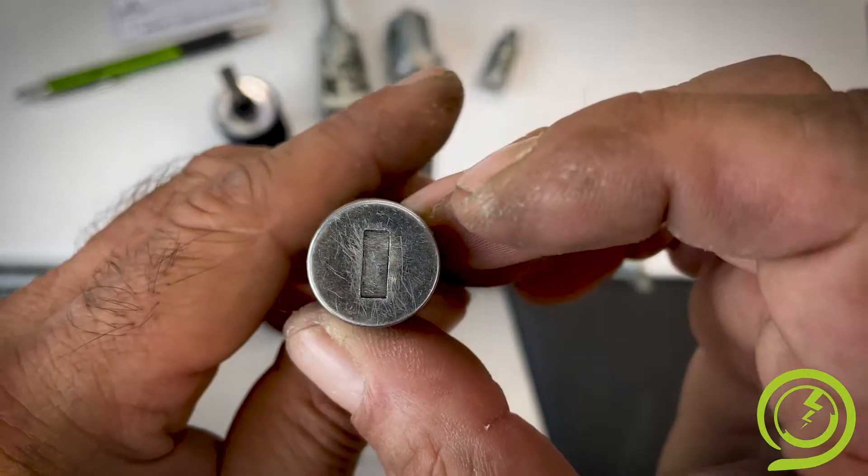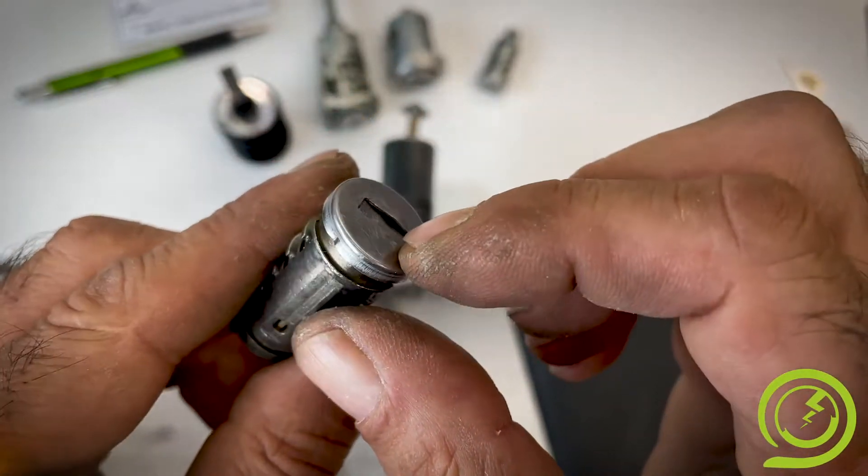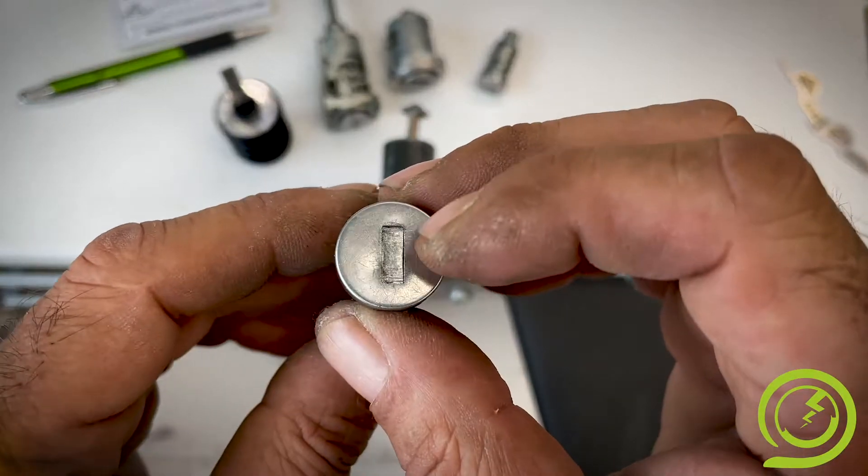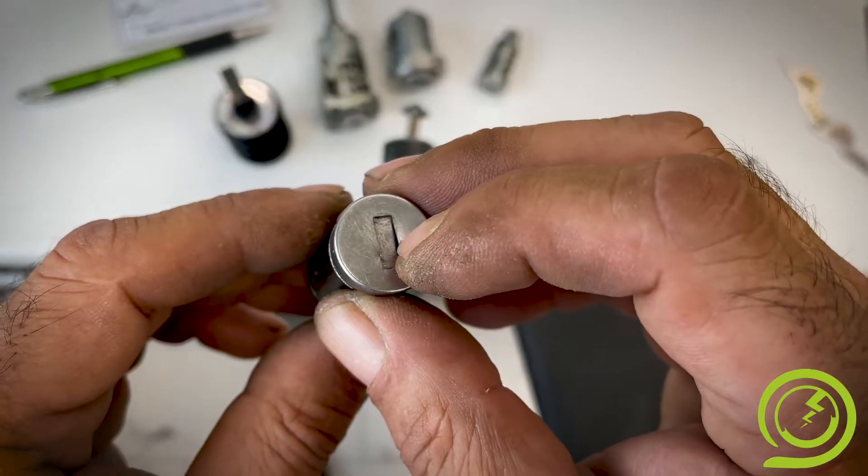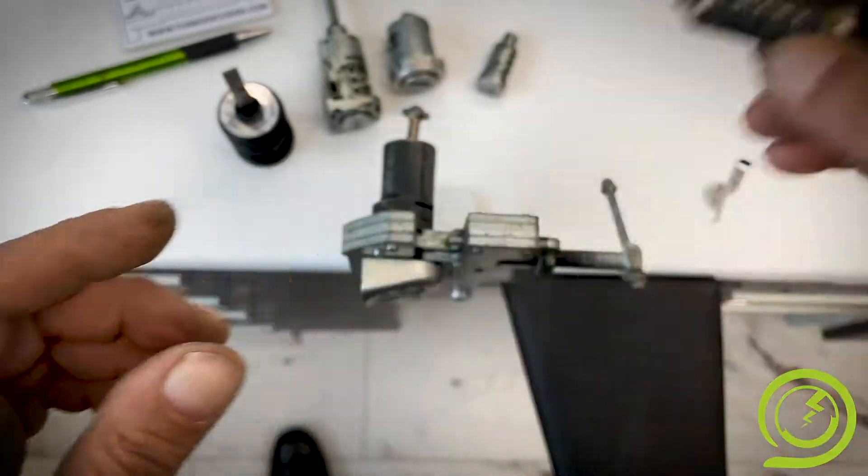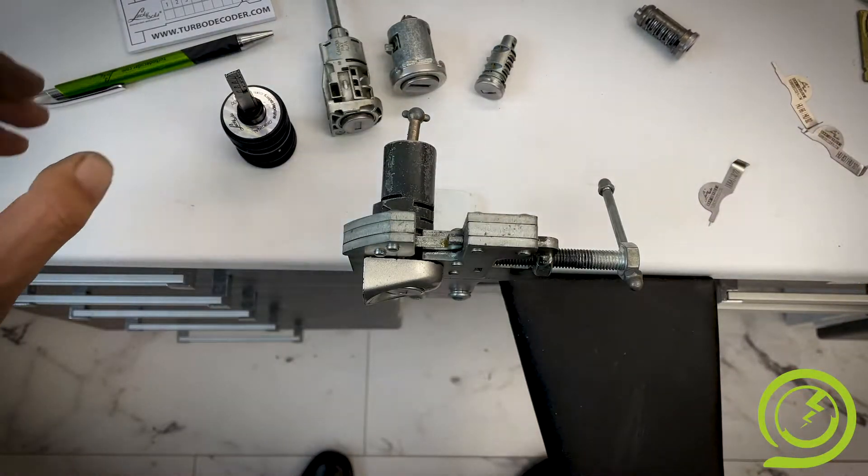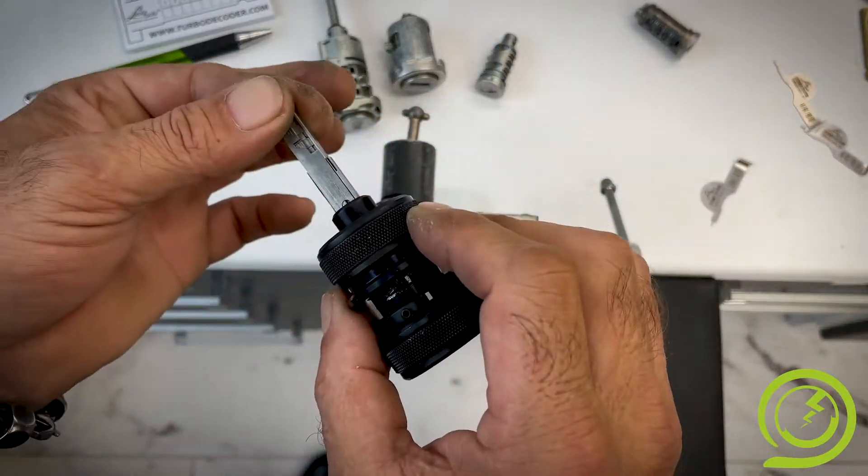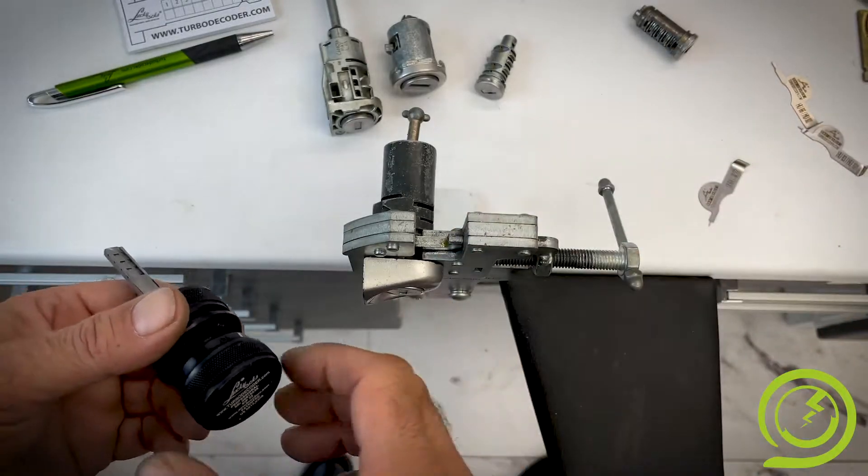When you see a deformed lock like this one, please do not use the turbo decoder because probably the lock is damaged and you risk breaking your tool. When you are ready with the reset of the pins, clean the lock.